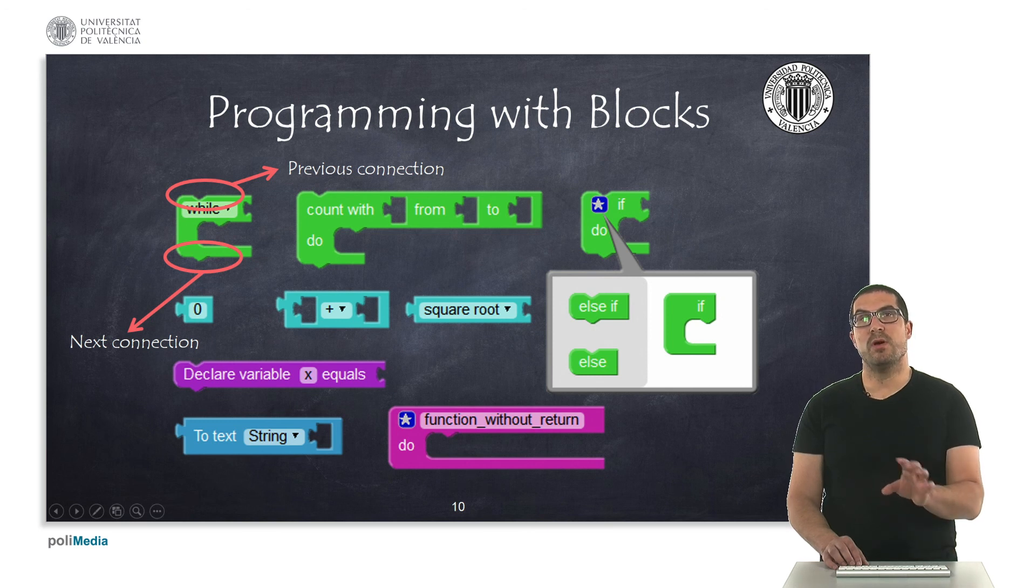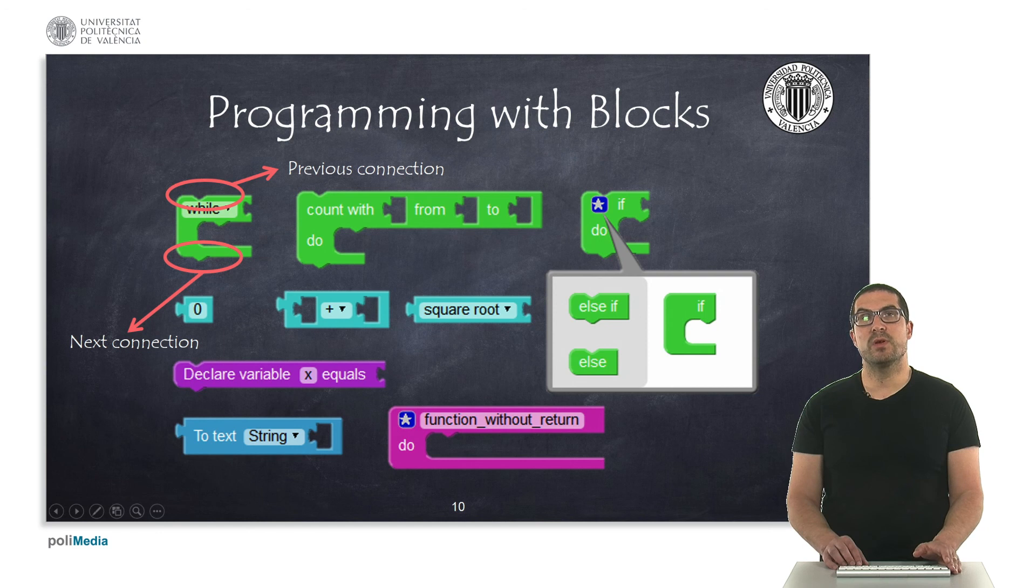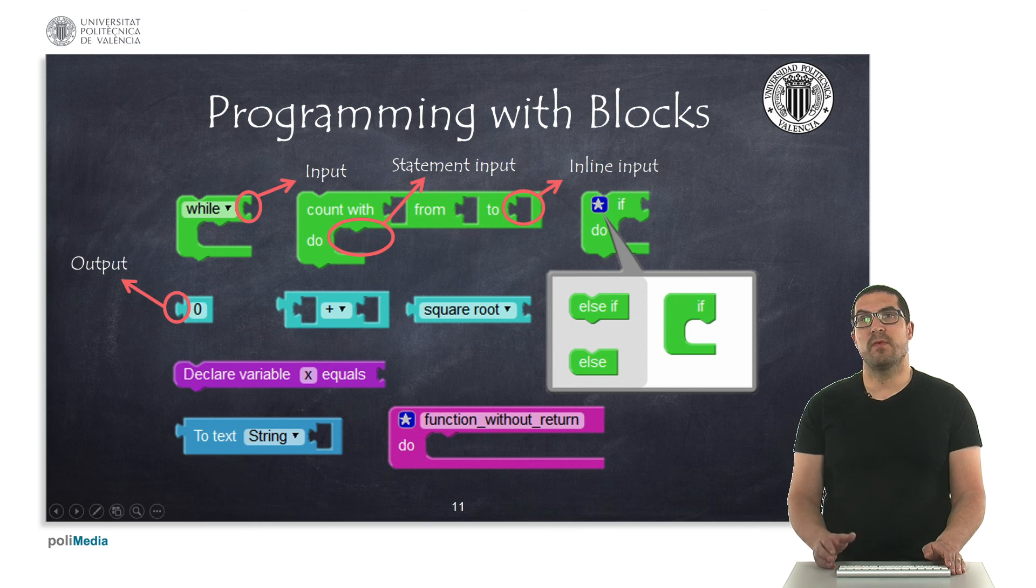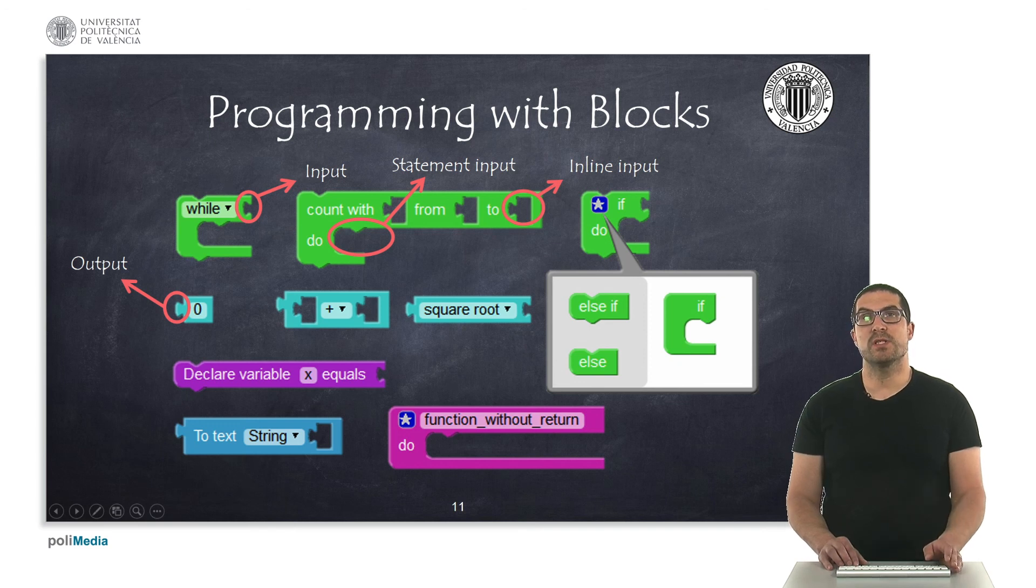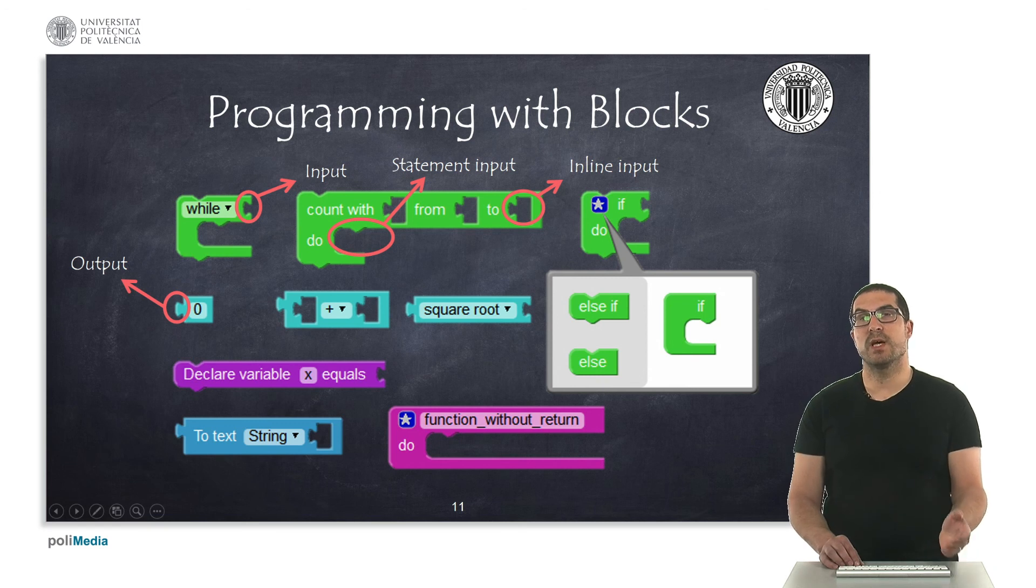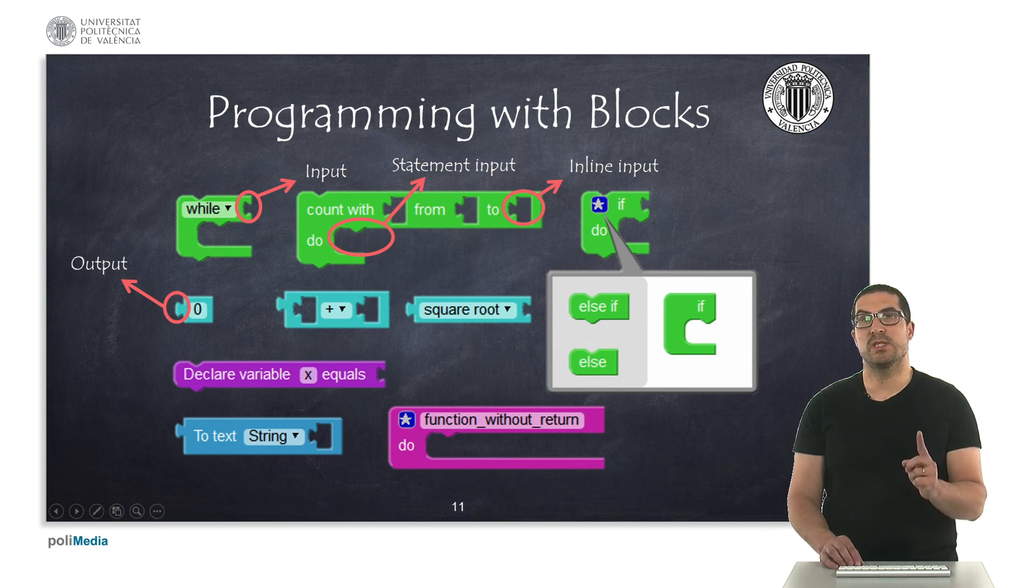For instance, most of the blocks have what we call the previous connection and the next connection. They're used to stack one instruction after another, so the instructions are executed sequentially. Then you have different types of inputs. You have a standard input in some of the blocks. You have inline inputs, as you can see there too. They are just exactly as one input, but they are inside, let's say, the instruction. You have a statement input. This input allows you to put inside it more blocks using the previous and next connections as we described before. Some instructions have an output, just simply one output.